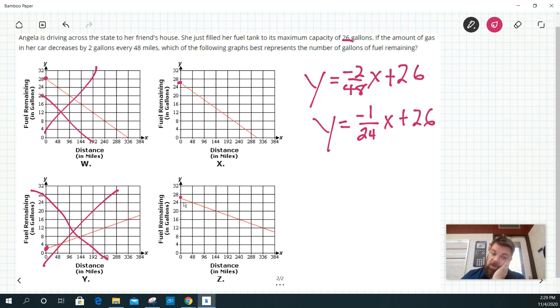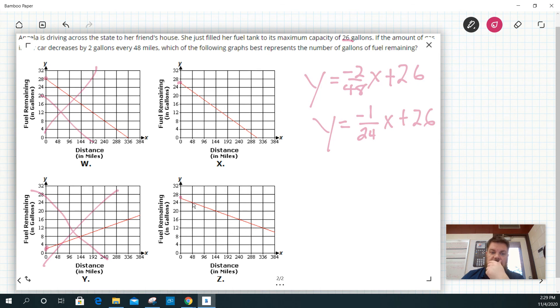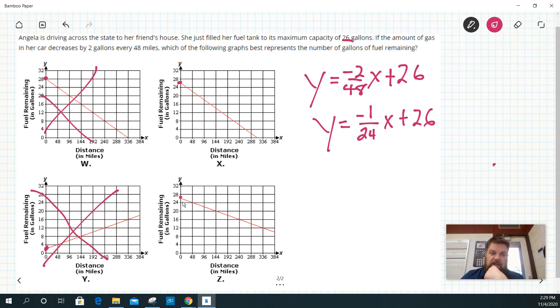So that's the graph I'm looking for. Now if I go down 2 here and I go over 48 here, I think it's this one because I'm going to go from 26 down to 24, and then I go over 48. So in other words, I went down 2 and then over here I went over 48. So this is the answer.